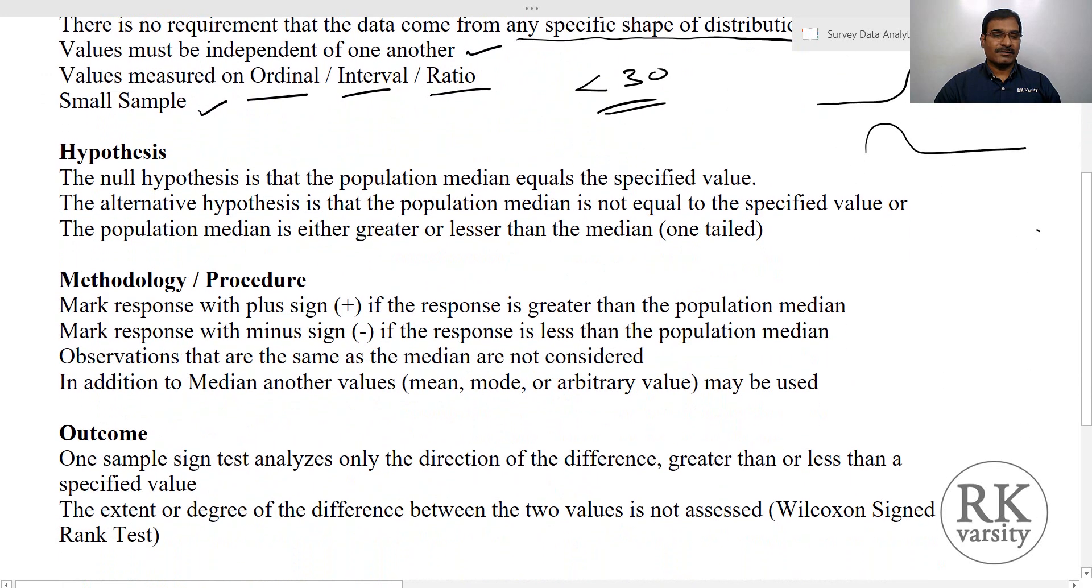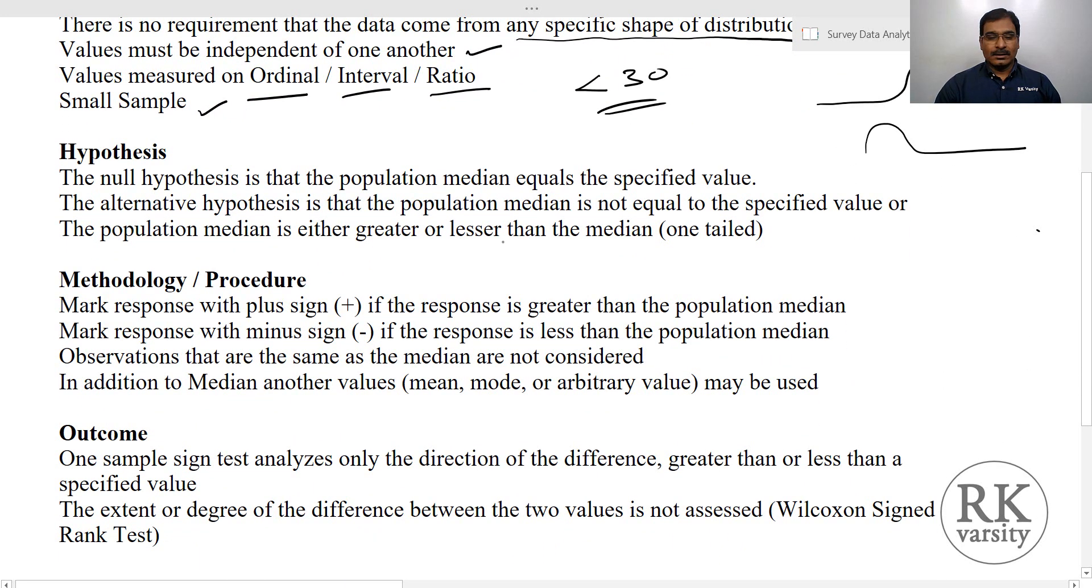Now the hypothesis that we frame in one sample sign test is that the median value equals the specified value. When you are measuring it, your null hypothesis, we say that the median equals your specified value or calculated value. The alternative hypothesis is that the median value is not equal to the specified value. When we are saying not equal to, it may be greater than or less than the median value.